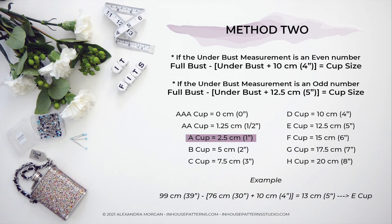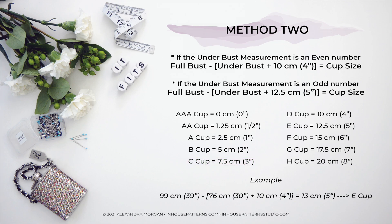A 2.5 centimeter difference gives you an A cup, a 5 centimeter difference gives you a B cup, a 7.5 centimeter difference results in a C cup, and so on with each cup size increasing by 2.5 centimeters or one inch. If your result lands in between, round to the nearest number. This method is a little less popular lately but may work better for those with a more upper rounded back. However, if your back is broader or more muscular than average, this method may also be suspect.